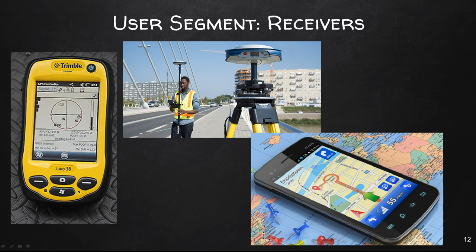The final segment is the user segment, which consists of GPS receiver equipment. In this class we'll be using the Trimble Juno 3B — you can see an image on the screen — which receives signals from GPS satellites and uses this transmitted information to calculate the user's three-dimensional position: latitude, longitude, and elevation, as well as the time.